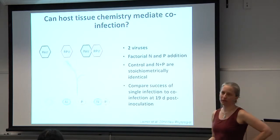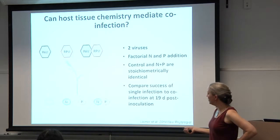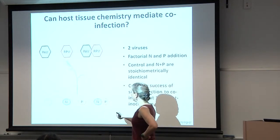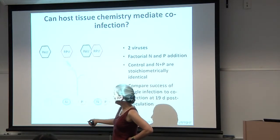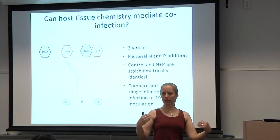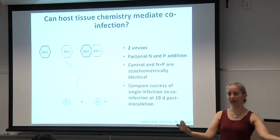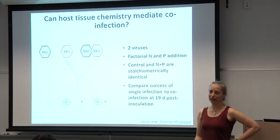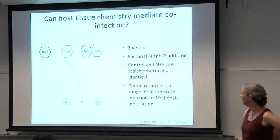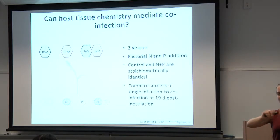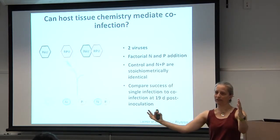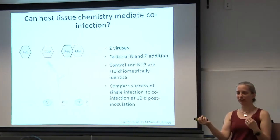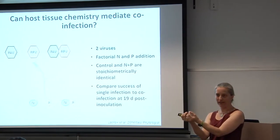She had nutrient environments that were stoichiometrically balanced such that N and P added together were at the same ratio but a different rate than our control or low treatment. So we have low N, low P and high N, high P at the same ratio but very different rates. She tracked infection, infecting the host, and at 19 days post-inoculation looked at the success of infection of a single virus and two viruses together in a host.